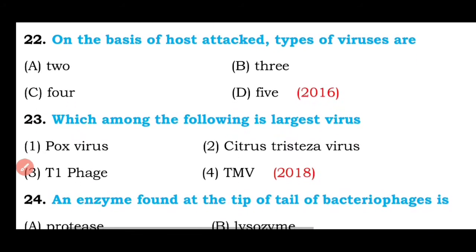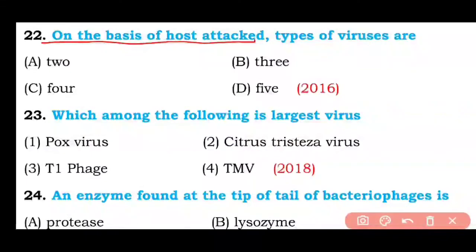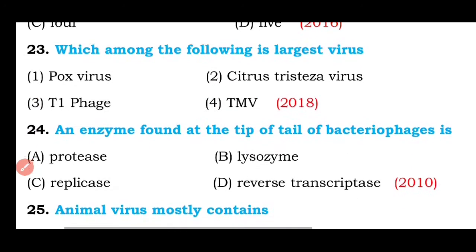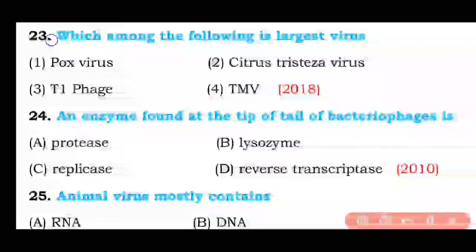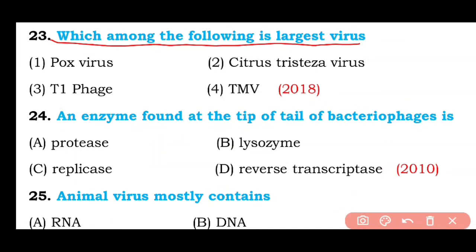Question number twenty-two: On the basis of host attacked, types of viruses are two, three, four, or five? The correct answer is option B — on the basis of host infected, viruses are of three types: plant viruses, animal viruses, and bacterial viruses.